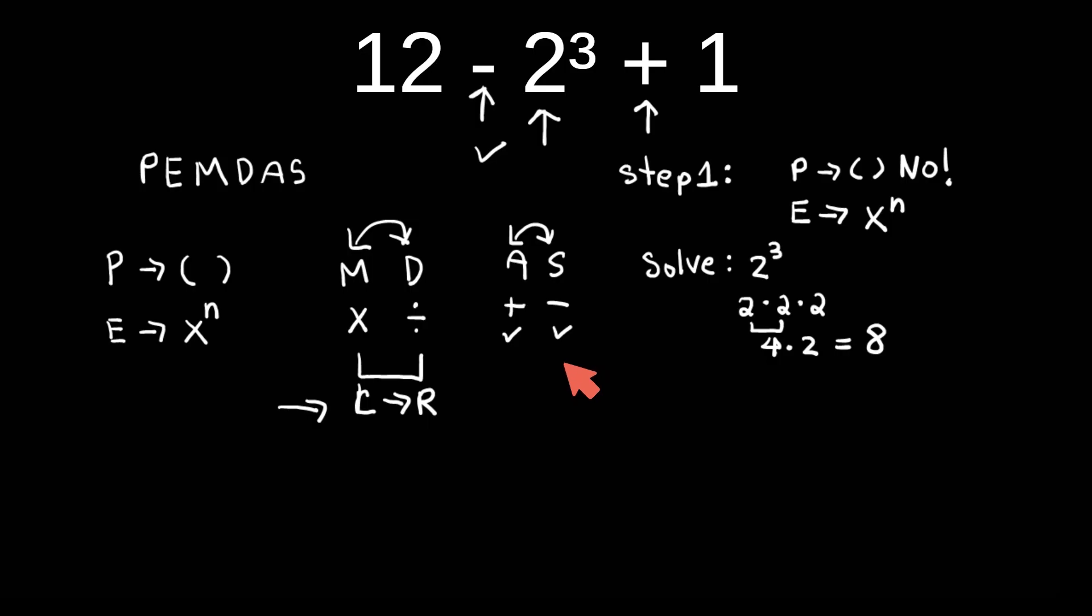Now you have a new problem: 12 minus 8 plus 1. Now what step do you take? Some think it's addition because they see PEMDAS and the A coming first, but you have to remember: addition and subtraction, we solve from left to right. Whichever you see first, you've got to solve first.